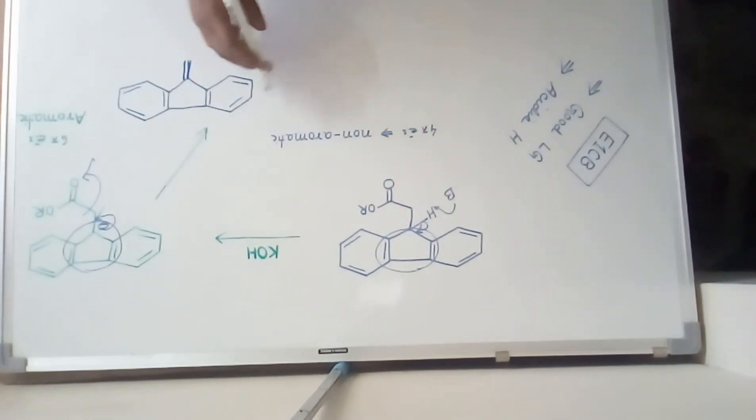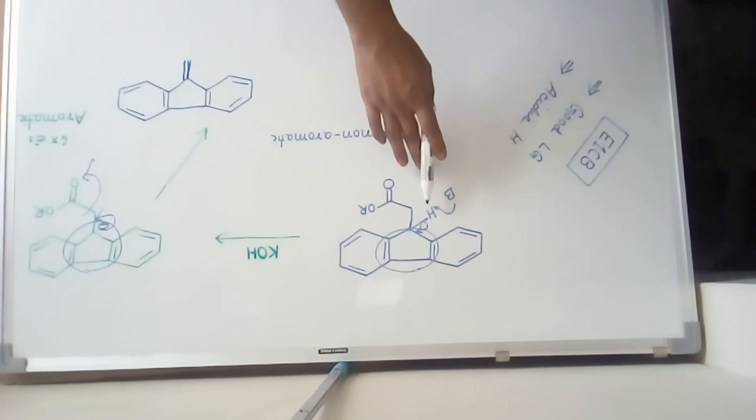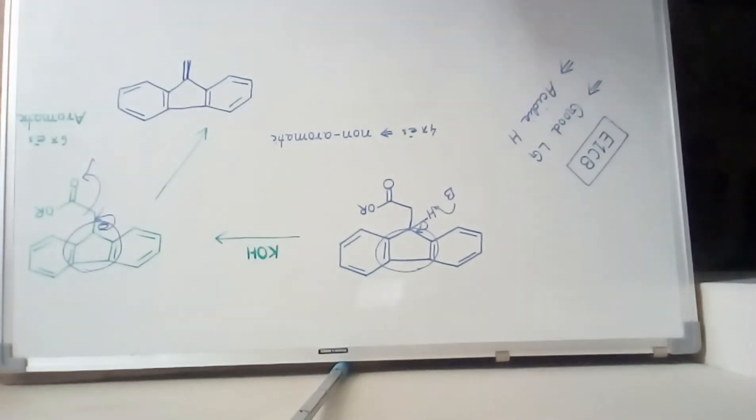So in the given example we have seen that we have a presence of very good acidic hydrogen and we have presence of a good leaving group. So these two are essential for an E1CB reaction. Thank you.